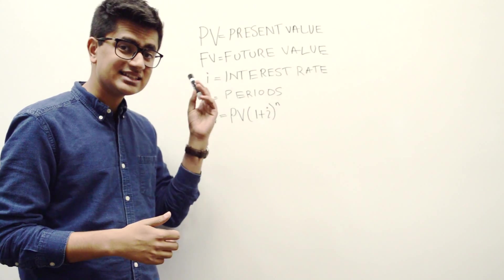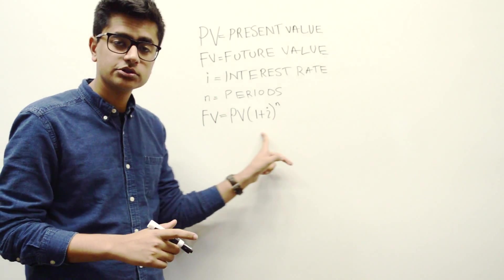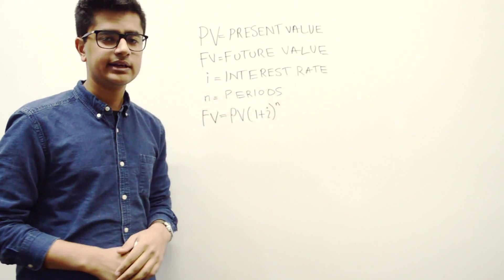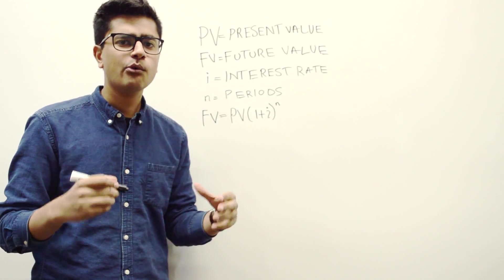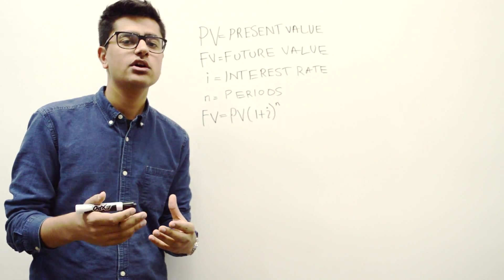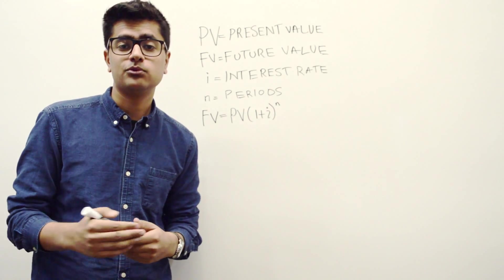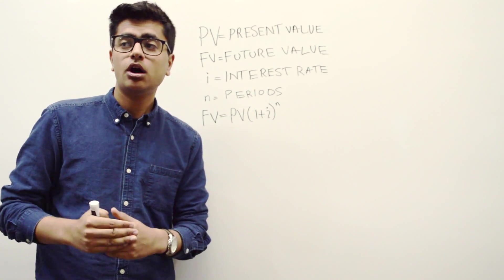The next part is the future value of money, which is a bit more complicated and follows this formula, which I will explain in a minute. Future value is essentially how much money you can potentially have any number of periods, like one day from now, one year from now, a hundred years from now.